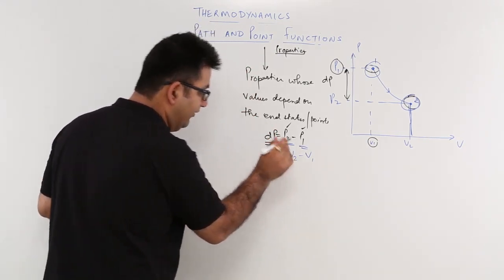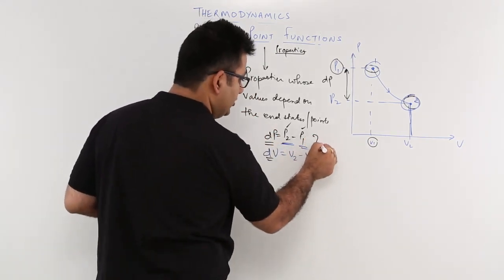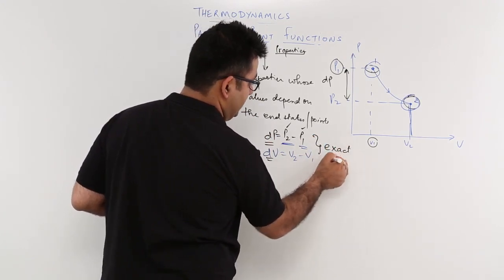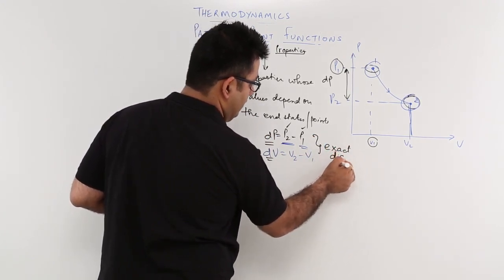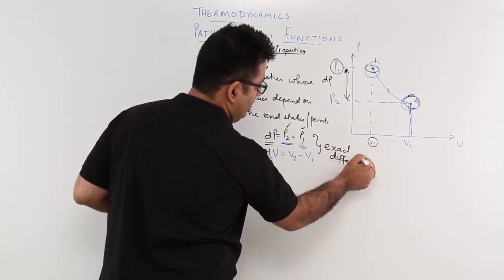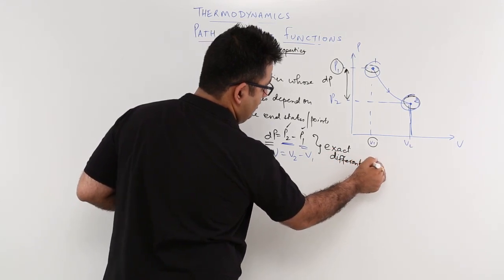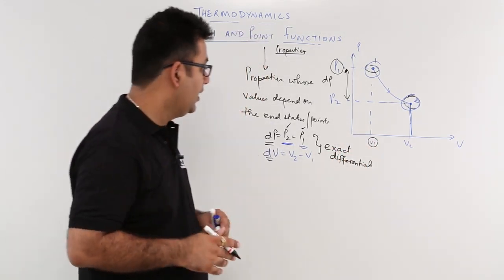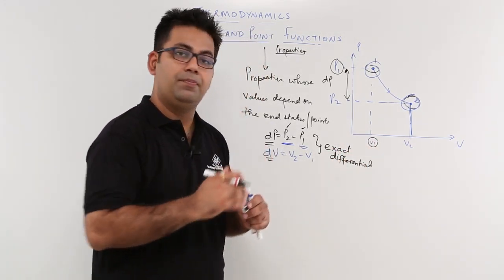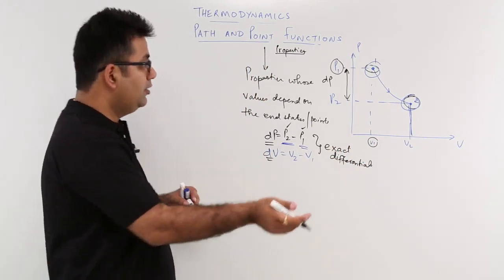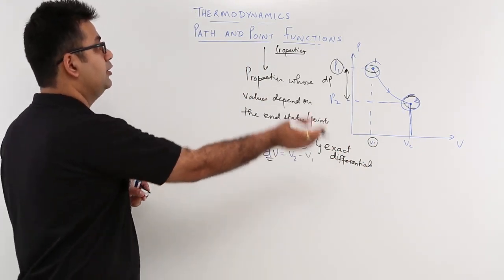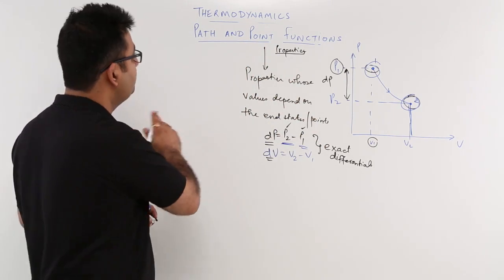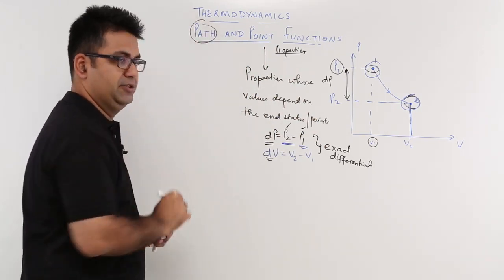Because you are able to find out dp and dv, these are also known as exact differentials. After point functions, let us take this knowledge to understand the path functions.